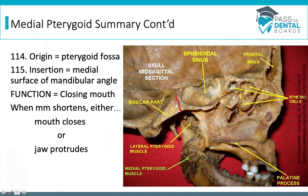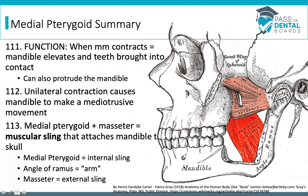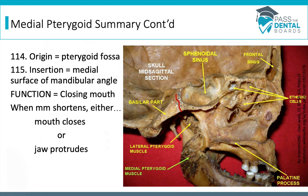That makes sense because it's part of the sling — these two muscles are almost superimposed over each other. Its function is to close the mouth when the muscle shortens or to protrude the jaw. It's not going to do both at once; it's just that when your jaw protrudes, the medial pterygoid muscles are active. The lateral pterygoid muscles are going to be much, much more active, which is why they call the lateral pterygoid the main protruder of the muscles of mastication.